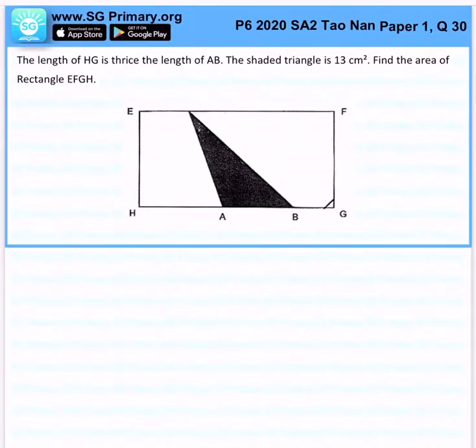The length of HG is thrice the length of AB. The shaded triangle is 13cm². Find the area of rectangle EFGH.